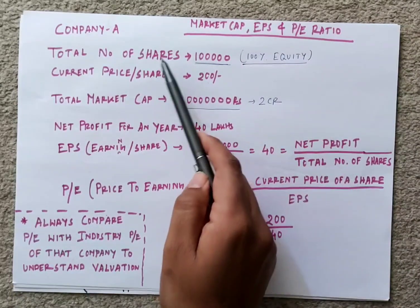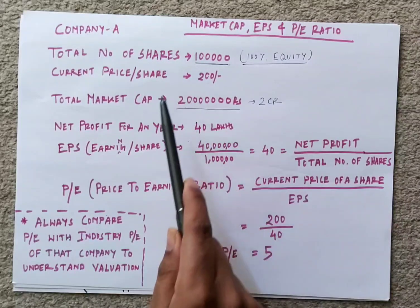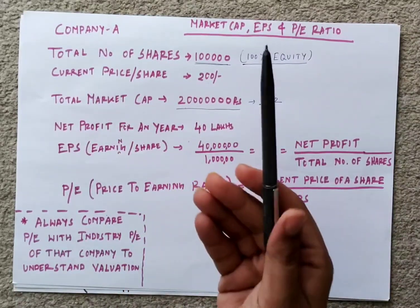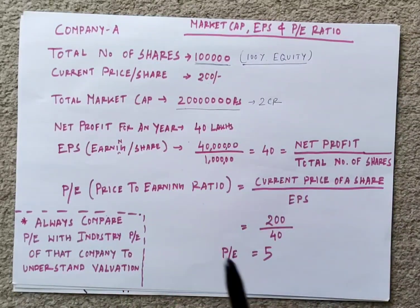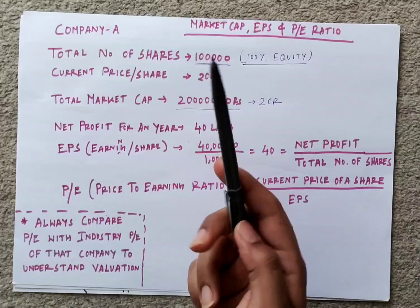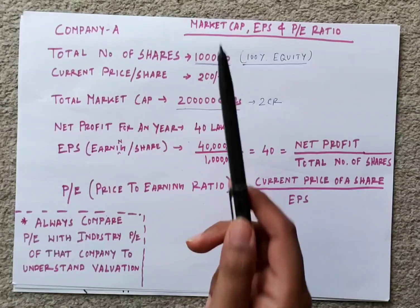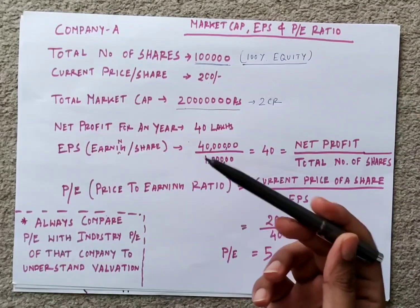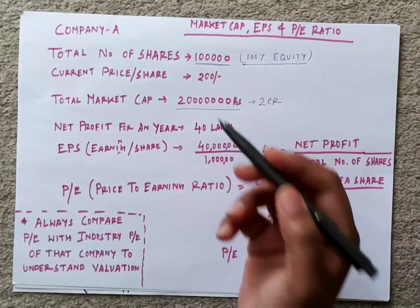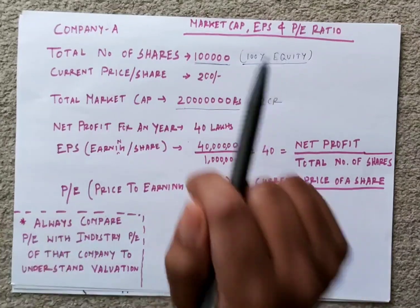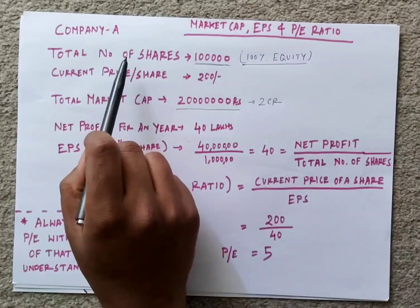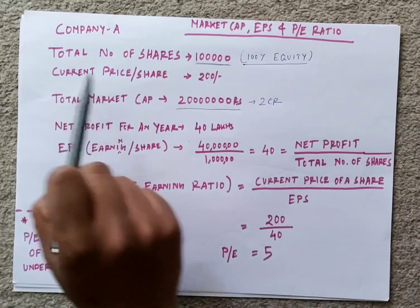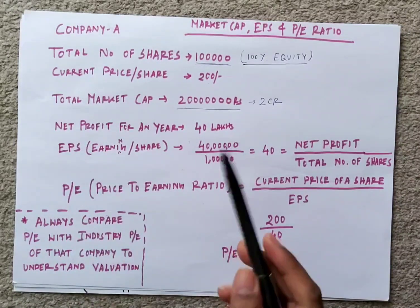So that's what market cap is — you simply multiply the total number of shares by the current price. Similarly, if you go to any company's balance sheet, like Reliance or TCS, you will see the market cap listed, such as 14 lakhs or 11 lakhs crore. Market cap is nothing but total shares multiplied by current price.